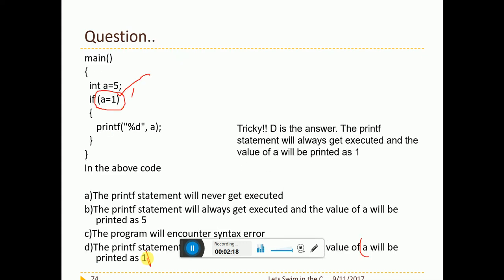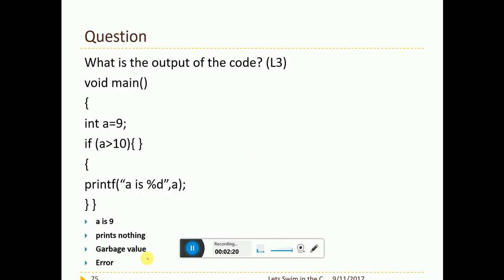You can see that it gets always printed. Next question. A equal to 9. If a greater than 10, I have a curly brace open and closed and I have another curly brace here. Is this right? Do I have a value for this particular curly brace that I am including? Will it cause any trouble? No. This will not cause any trouble. This is absolutely fine. It is executed unconditionally. So we will have no problem and a is 9 is the output.